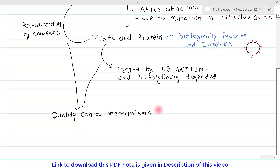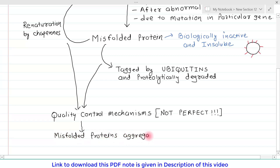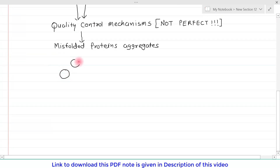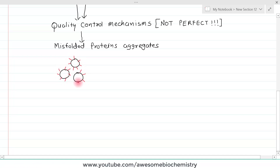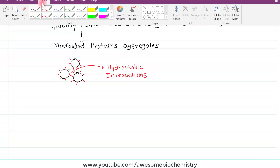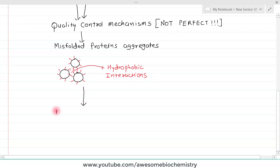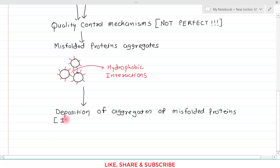The biggest problem is that this quality control mechanism is not perfect. Misfolded proteins tend to aggregate because their surface hydrophobic residues interact with the hydrophobic residues of other misfolded proteins. Once they aggregate, deposition of aggregates of misfolded protein occurs. This deposition may be intracellular, extracellular, or both, and leads to a number of diseases.